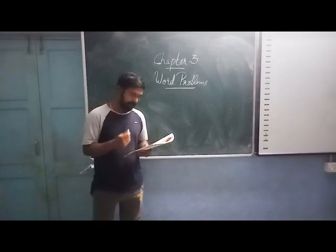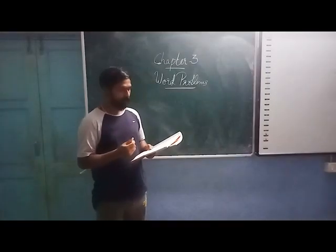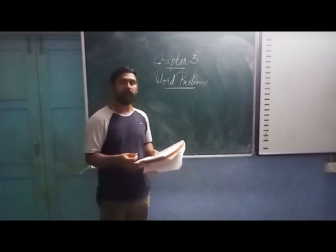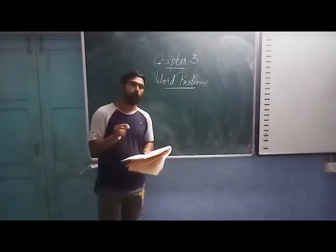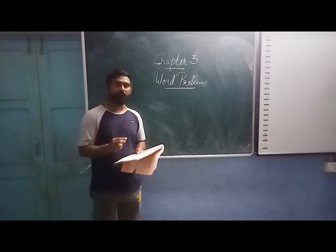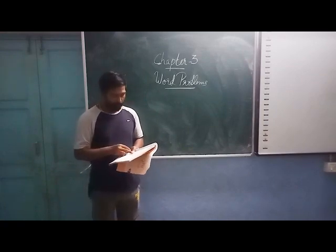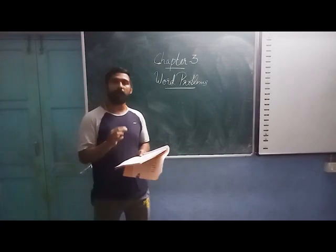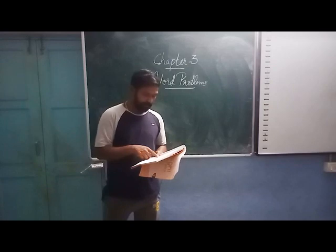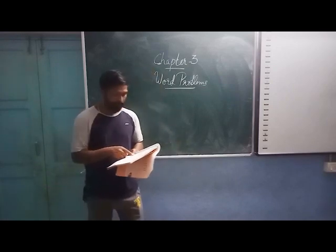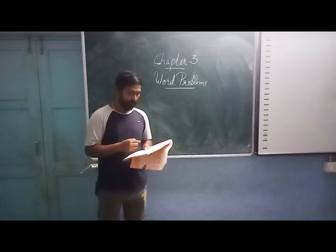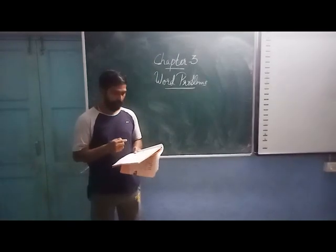I will read the first question for you. There were 695 mangoes in an orchard. An orchard means a garden — a big garden that is full of mango trees. There were 695 mangoes in the orchard, and 324 mangoes were plucked. How many mangoes are left in the orchard?